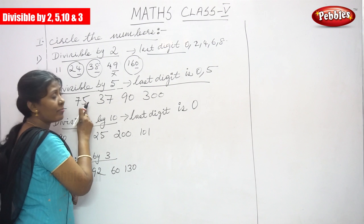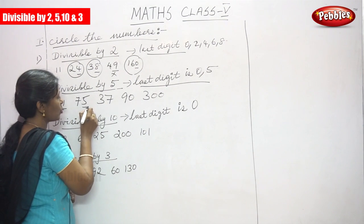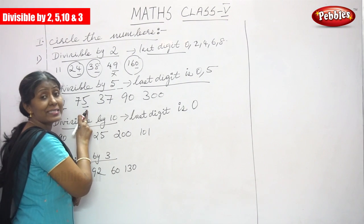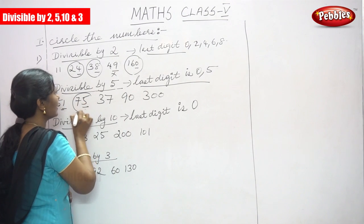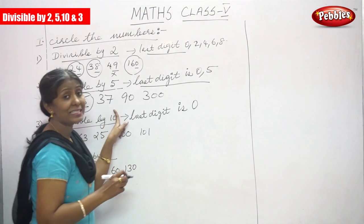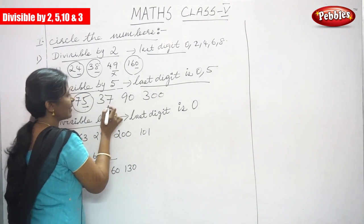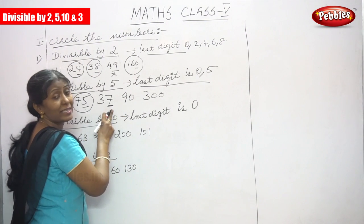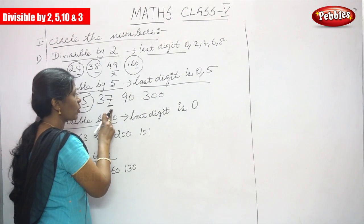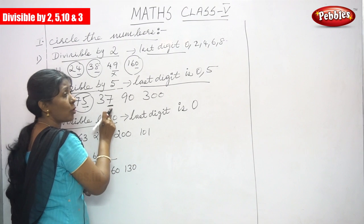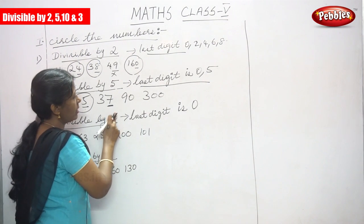Next, 75 — the last digit ends with 5, so it is divisible by 5. Circle the number. Next number is 37 — the last digit is 7. So it is not divisible by 5, because the last digit does not end with 0 or 5.